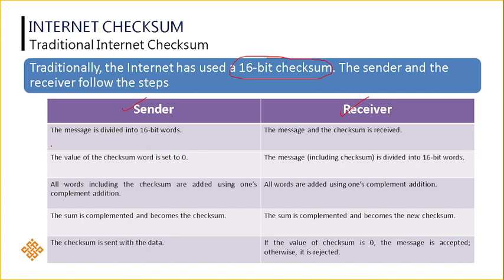First I will tell the steps, then I will demonstrate the same by taking one example. The first step at the sender side is the whole message will be divided into 16-bit words, because normally the Internet Checksum will support the 16-bit word that you can send at a single stretch. The second step is the value of the checksum word is normally set to 0 before calculating the checksum. Then the third step, all words including the checksum are added using the one's complement addition. The sum we got is complemented and it becomes the checksum.